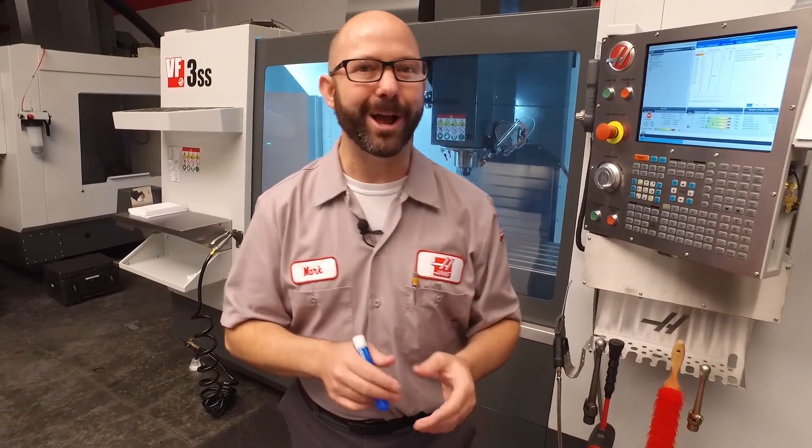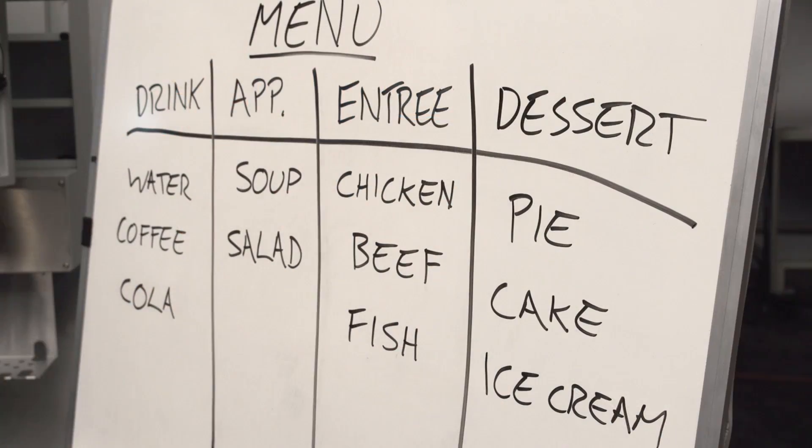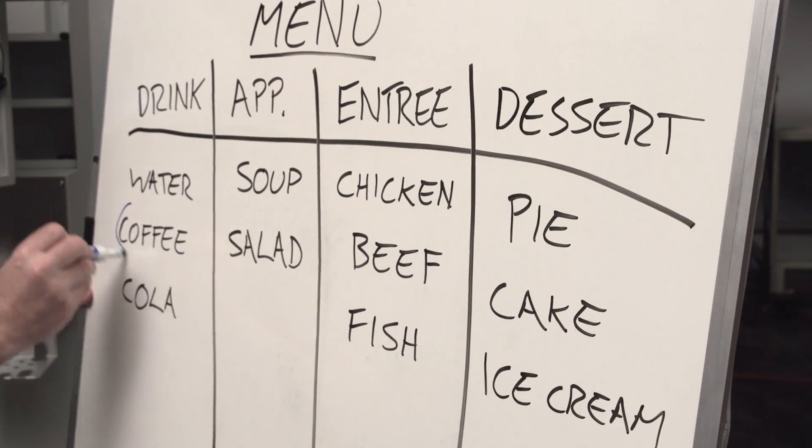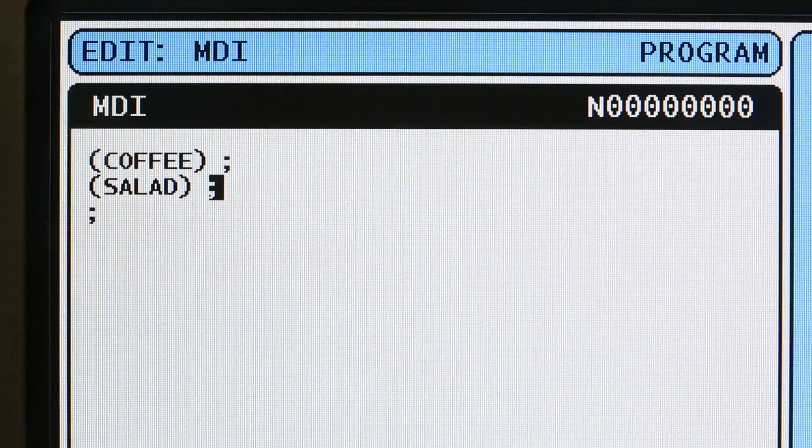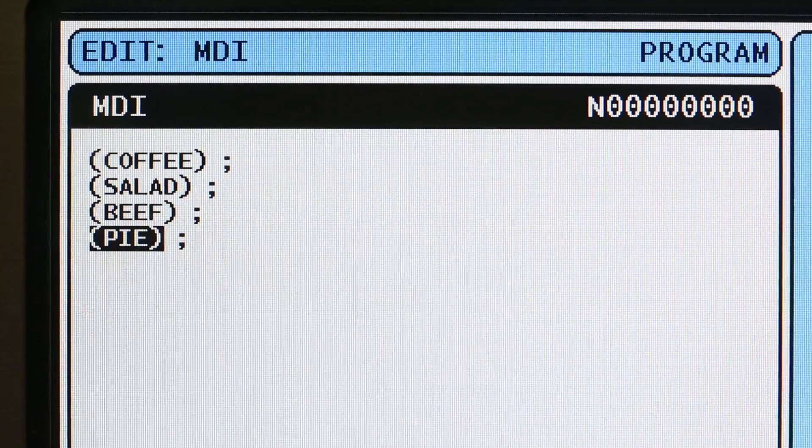Now you can think about G-code like items on a restaurant's menu, where for one low price you can get one item from each category, from each group. Now I'm gonna get the coffee, a salad, the beef, and pie. You cannot have two pieces of pie.